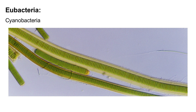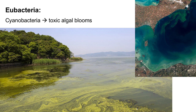When cyanobacteria become too abundant in the water — for example if there are too many nutrients — they show up as so-called algal blooms. Many other organisms can also form algal blooms, algae for example. But most of the toxic algal blooms are actually caused by cyanobacteria. The small photo shows an algal bloom of cyanobacteria in Lake Erie.